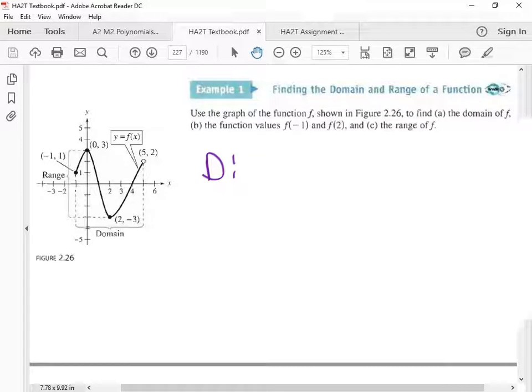Domain is whatever x values would be in the table for this. We look at the x-axis for that. Which x values are in our table for this function? We start at negative 1, which is right here, and then we go all the way to 5. So we have negative 1 to 5.